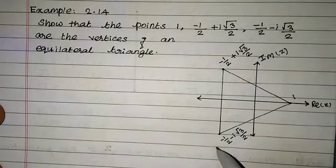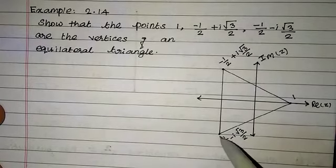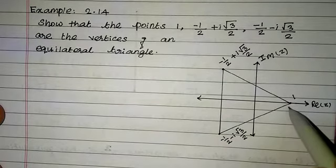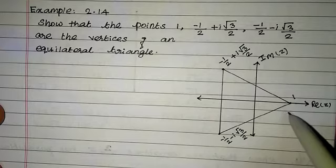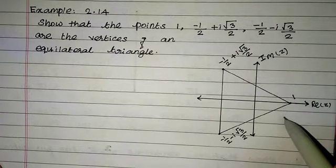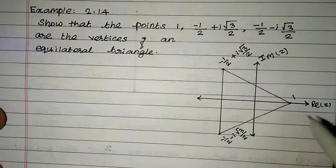So, given points form an equilateral triangle. To prove this, we use the distance formula: if z1 and z2 are two complex numbers, the distance between two points is the modulus of z1 minus z2.